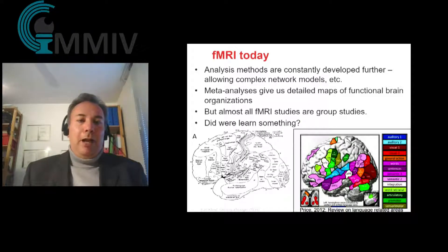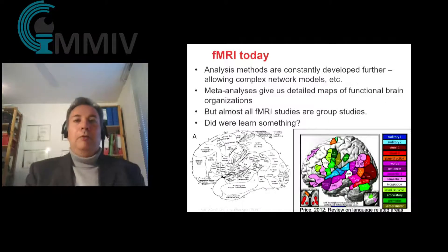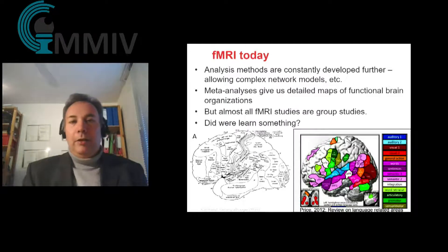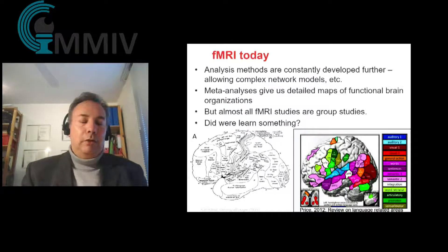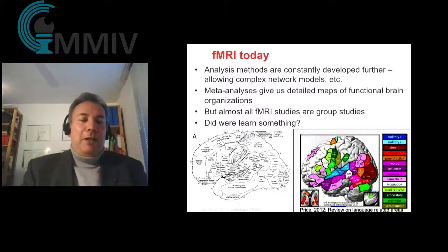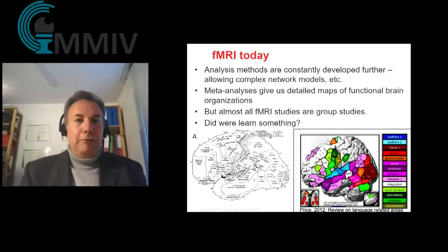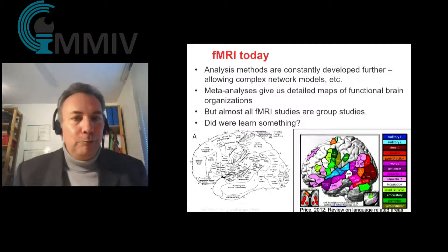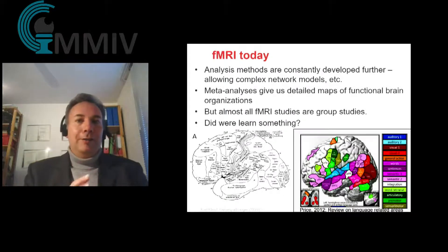If one asks the critical question — did we actually learn something with fMRI — one should go back to a paper from 1934 by Karl Kleist, a neurologist who examined soldiers from the First World War. If you compare the two maps, they are actually quite similar, which puts the question on the table: did we really learn something from fMRI? And those familiar with fMRI will note he also had the default mode network in there, which he called self-perception in a free translation.